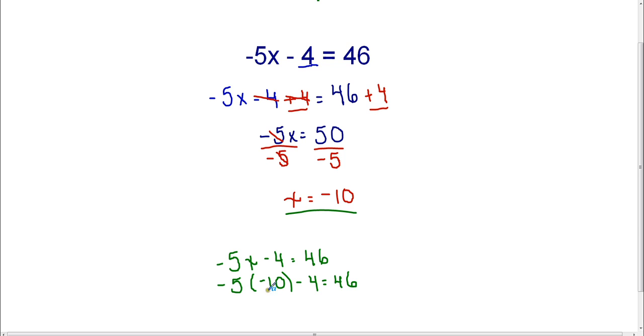So let's see. Negative 5 times negative 10 is positive 50. And 50 minus 4 is 46. So that does work out. And that's how you check your answer.